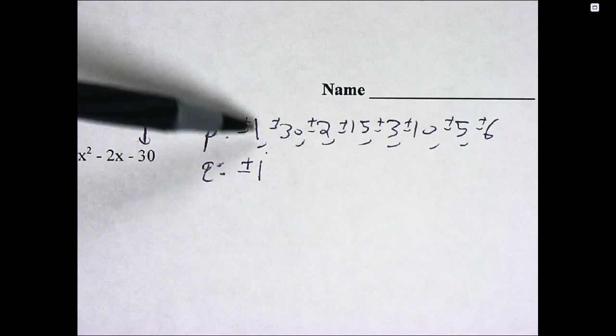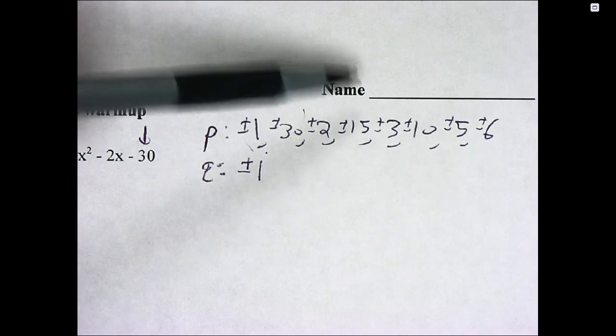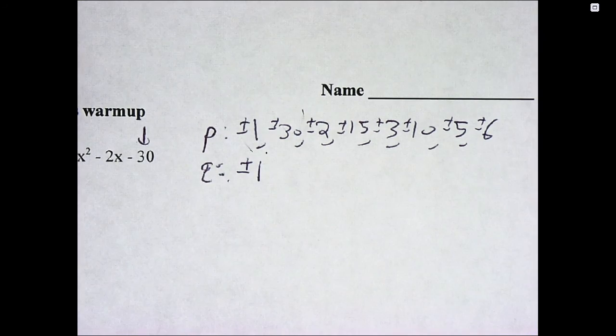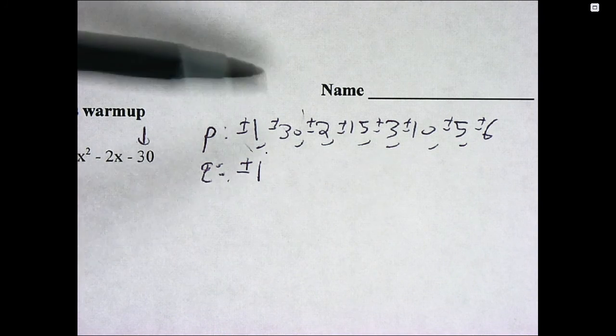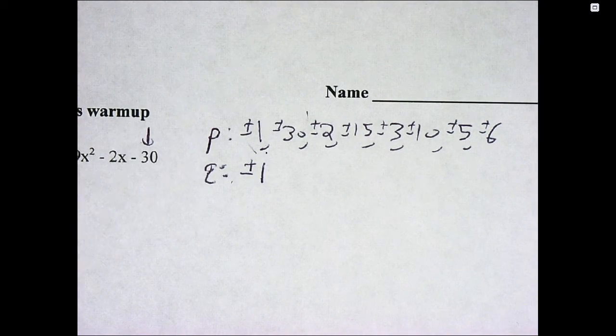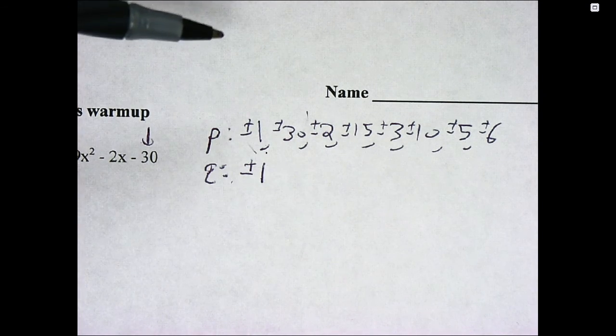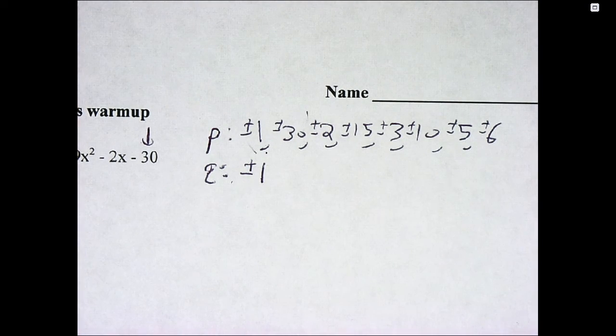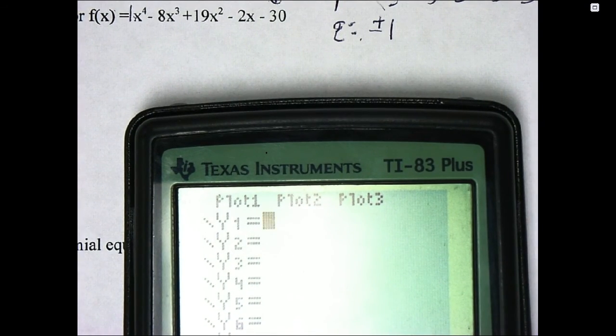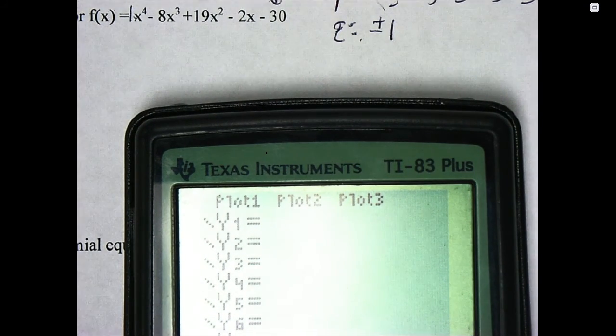And so we're going to pair up all these numbers with this number. If there were more numbers we would have to pair them up of course. So we've got quite a few things. There are some techniques you can use if you don't have a graphing calculator to sort of narrow it down without just doing guessing and checking. But we are definitely going to make use of the technology here. So I'm going to go to y equals screen.